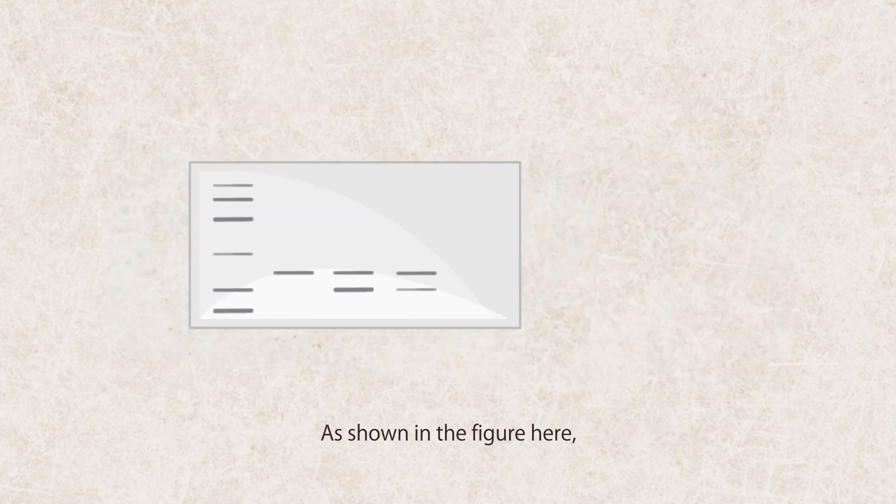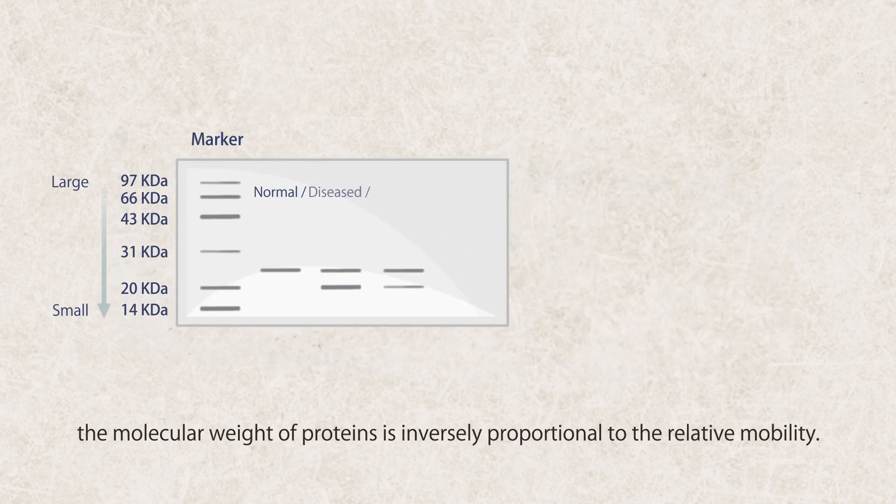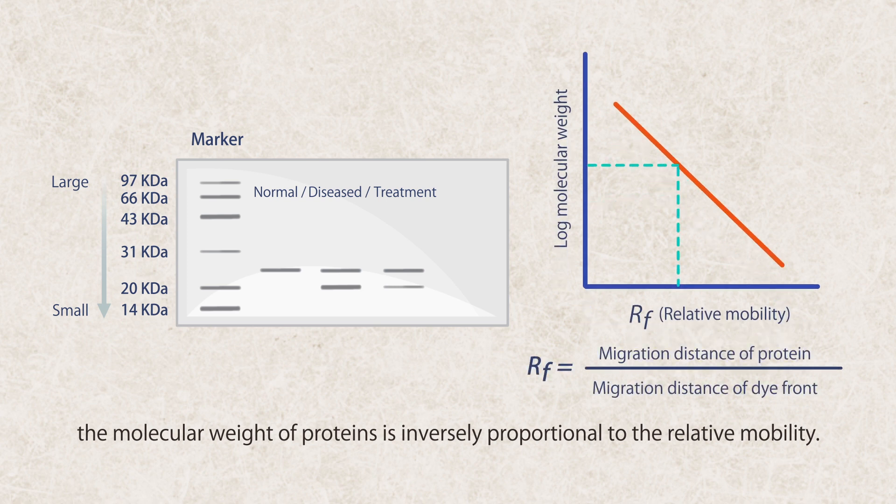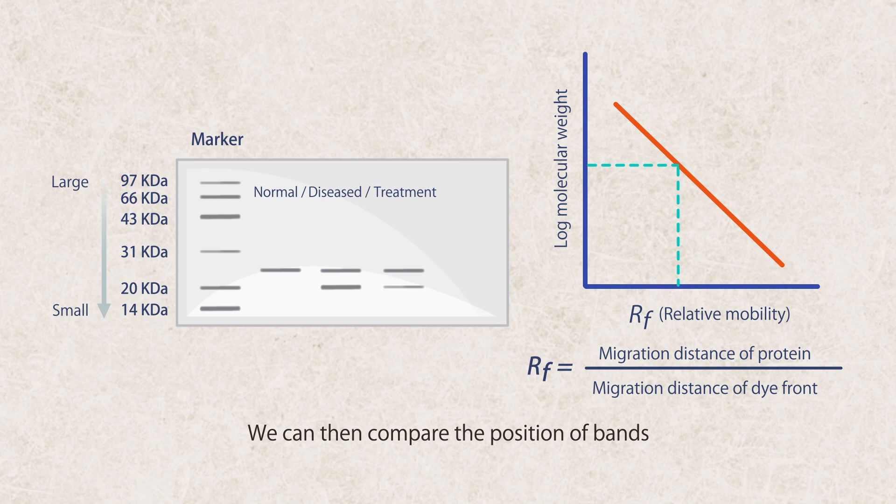As shown in the figure here, the molecular weight of proteins is inversely proportional to the relative mobility. We can then compare the position of bands with the marker to evaluate the size of proteins. We can also investigate changes of particular proteins under normal, diseased, or treatment conditions.